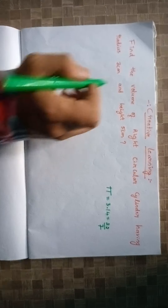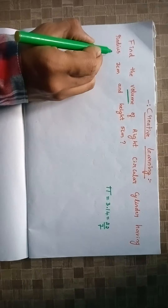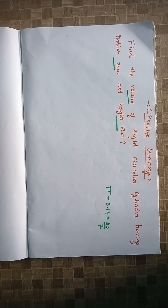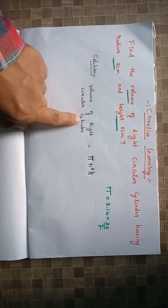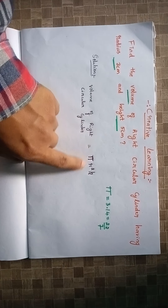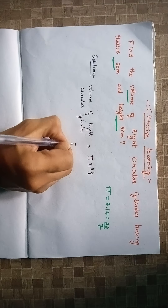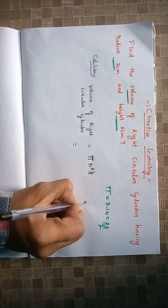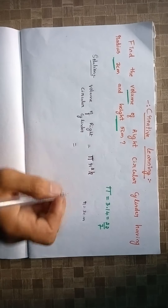Given: find the volume. Radius is given and height is given. The formula for volume of a right circular cylinder is π r² h. The value of radius is 3 centimeters and the value of height is 5 centimeters.